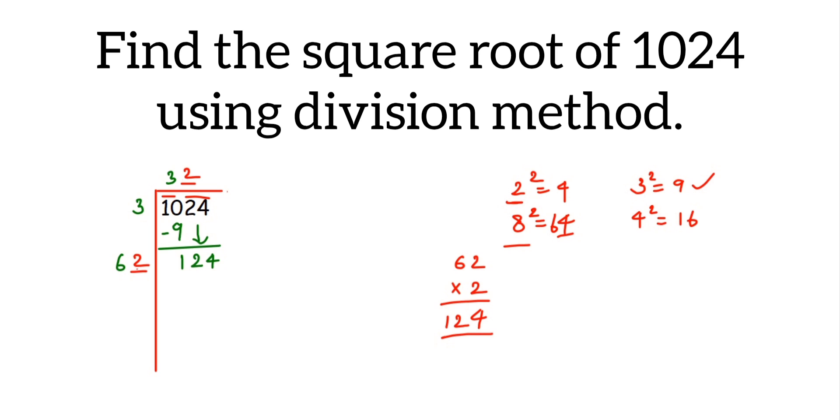Subtract these two numbers, we get 0. 0 means the number is a perfect square number and square root of 1024 is equal to 32. That's it.